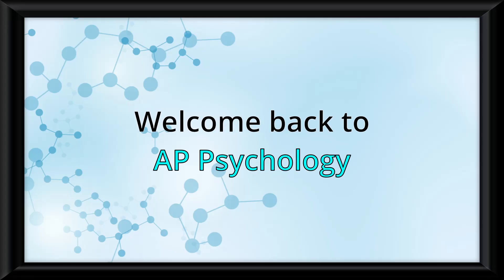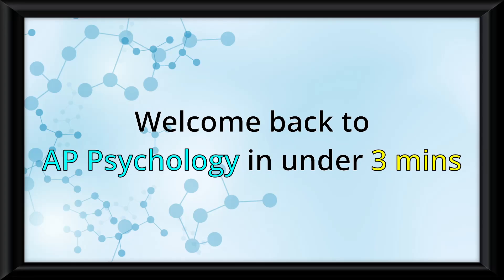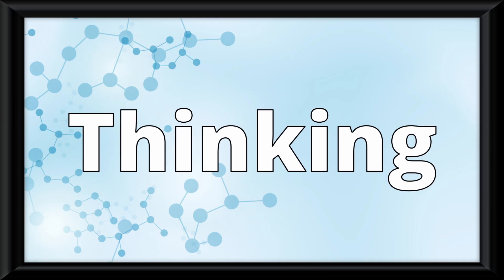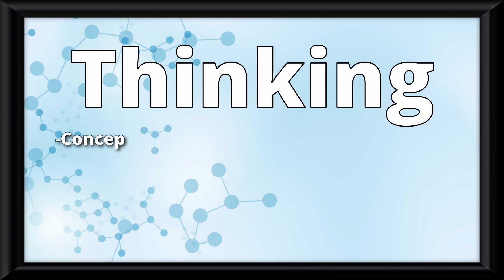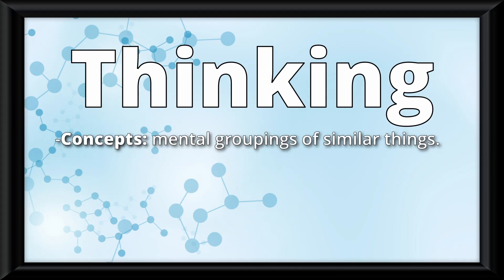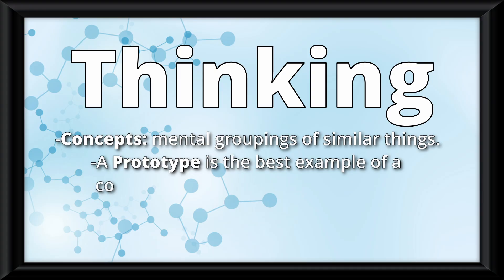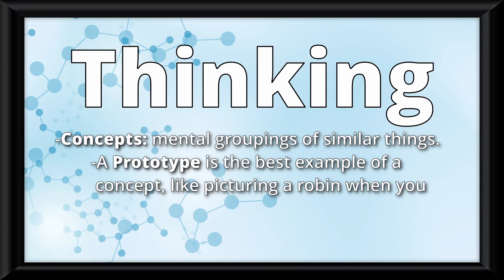Welcome back to AP Psychology in under 3 minutes. Today we will try and understand the basic way our brain thinks. Thinking starts with concepts, which are mental groupings of similar things. A prototype is the best example of a concept, such as picturing a robin when you think of a bird.